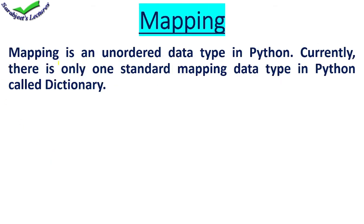Next is mapping. Mapping means that when you have to store unordered data — unordered data means you don't have indexing. Without indexing, data is stored connected as pairs in one variable. This data type is called mapping. In Python, we have a dictionary which is used for mapping.